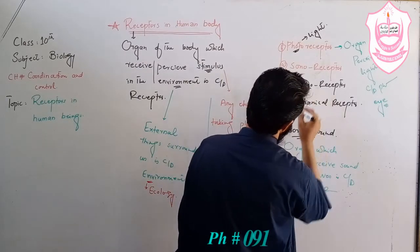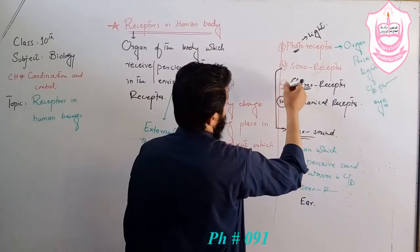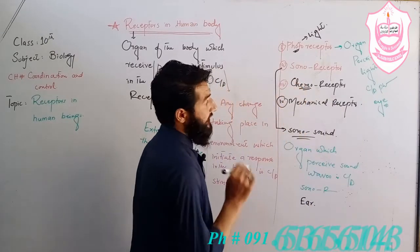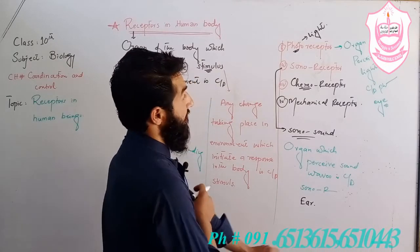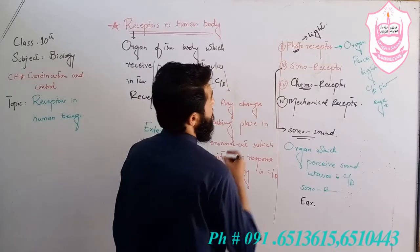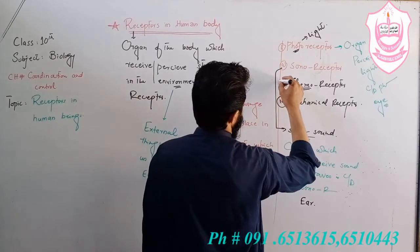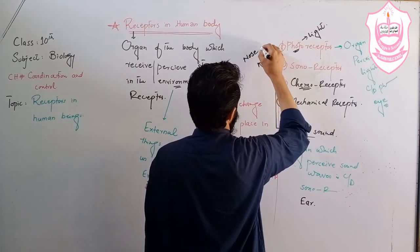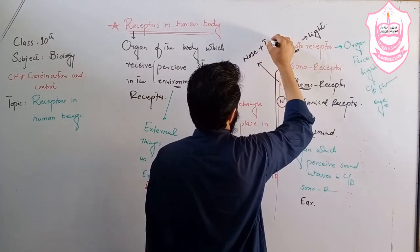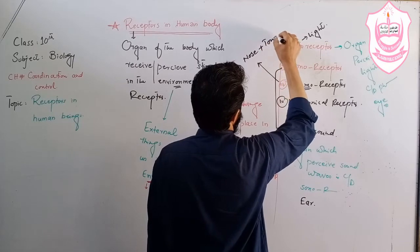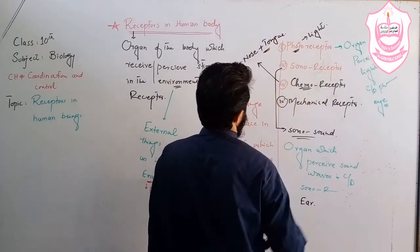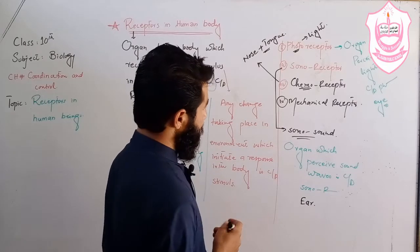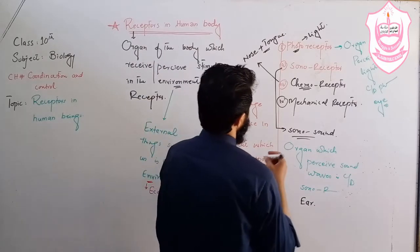Chemo — the organ which perceives or detects specific chemicals or different types of chemicals is known as a chemoreceptor. For example, the nose and tongue are called chemoreceptors.